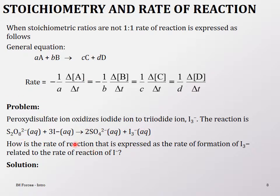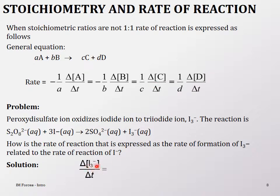Here is a problem: peroxydisulfate ion oxidizes iodide ion to triiodide ion (I3⁻) and the reaction is given. How is the rate of formation of triiodide ion related to the rate of disappearance of iodide ion? The iodide ion is the reactant, so it is negative, and the triiodide is the product. The triiodide has a coefficient of one, so nothing divides there, whereas for iodide ion you divide by three. This means when three moles of iodide ion react, you get only one mole of triiodide — that is what this fraction indicates.